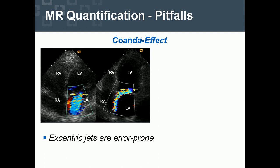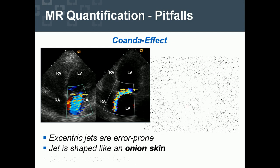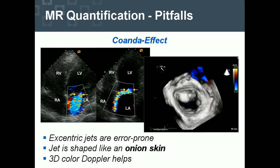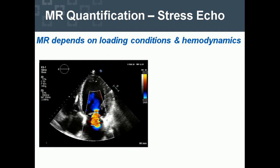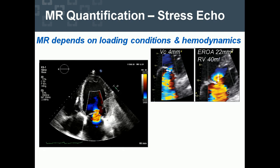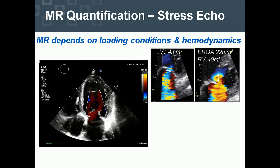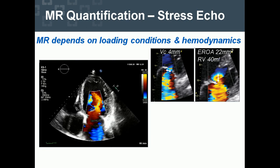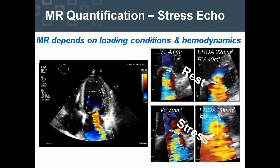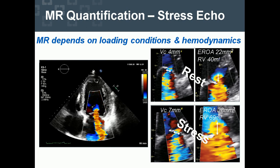Coanda effect and other pitfalls: eccentric jets are error-prone because the jet is sometimes shaped like an onion skin and appears much smaller than it actually is. 3D color can help estimate the real size of the jet and true severity of regurgitation. MR severity also depends on loading conditions and hemodynamics, which is why stress echo has a role. For example, a vena contracta of just 4 mm at rest — moderate — can increase to 7 mm on stress, with regurgitant volume and regurgitant orifice area reaching critical limits.